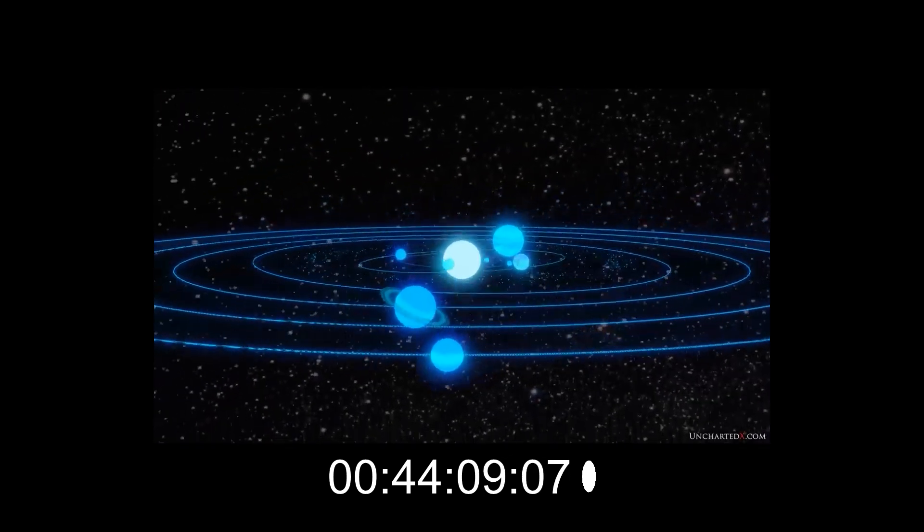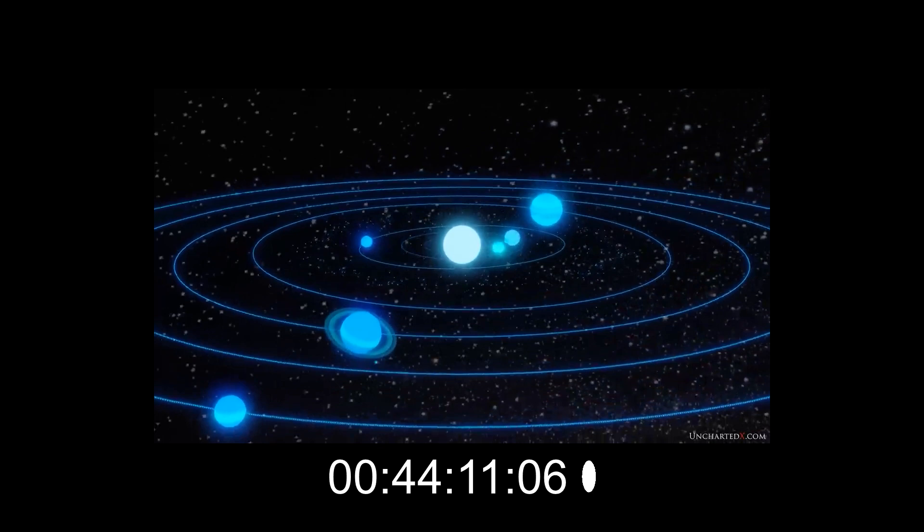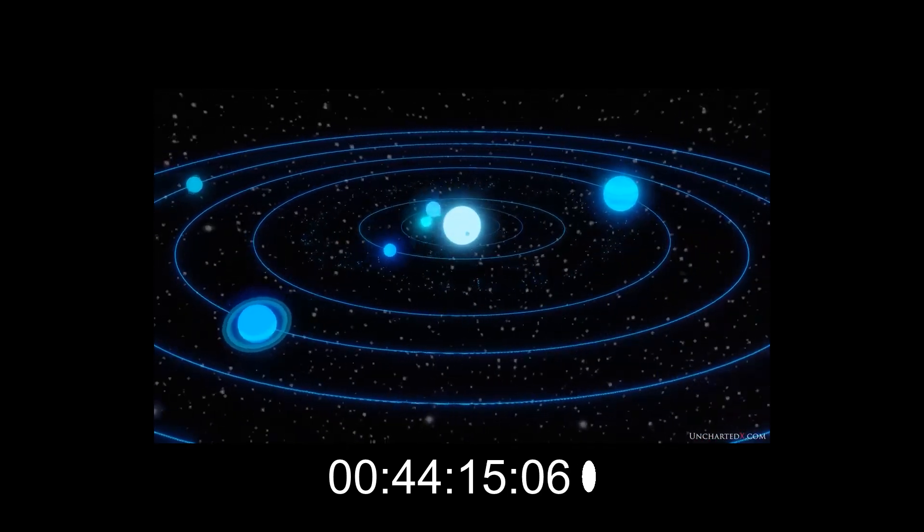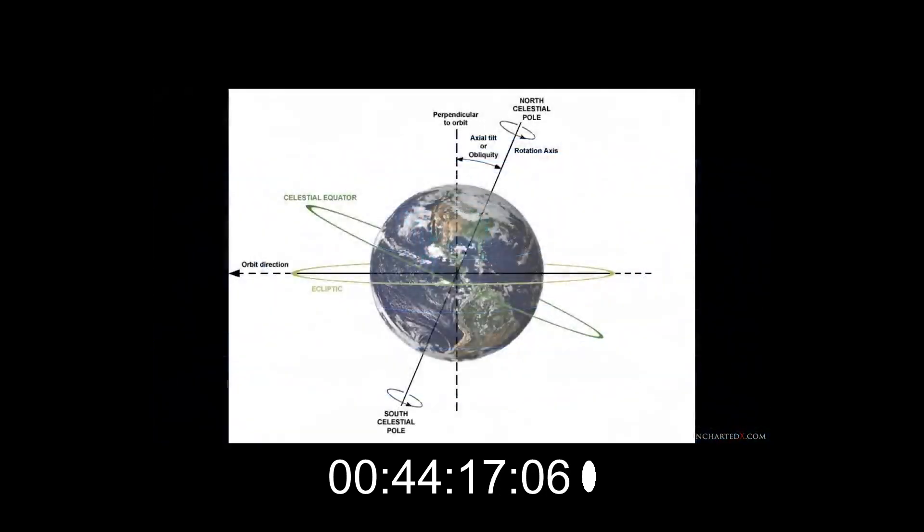The ecliptic is the plane projected by the Earth's orbit around the sun, more or less the disk in which all of the planets orbit. The obliquity of the ecliptic is the angle between the plane of the Earth's equator and the plane of the ecliptic. As most people know, the Earth's axis is tilted, so that angle today is approximately 23.5 degrees.